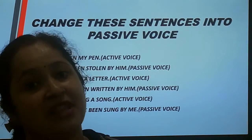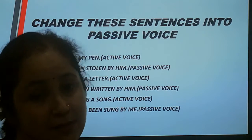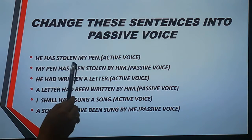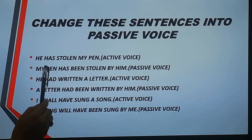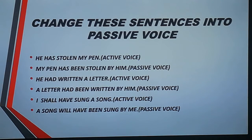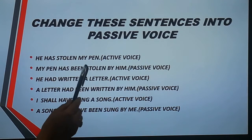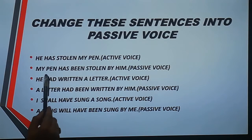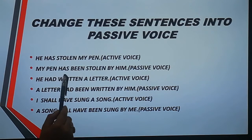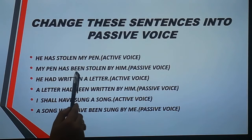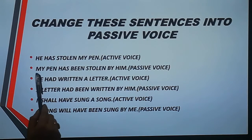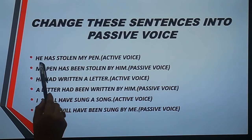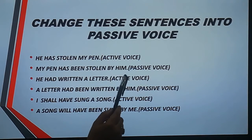Let us try to understand with the help of these examples. 'He has stolen my pen' — here 'he' is the subject, 'has stolen' is the verb, and 'my pen' is the object. We put 'my pen' at the start of the sentence. Since 'my pen' is a singular subject, we use 'has been', making it: 'My pen has been stolen by him'.